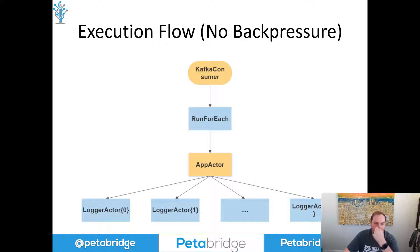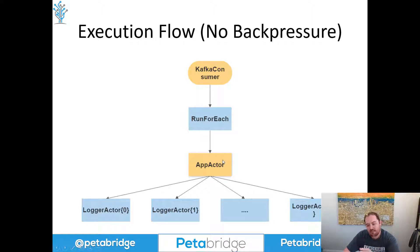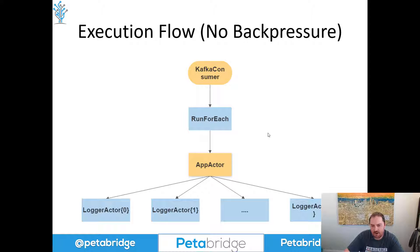Here's what the workflow kind of looks like: we have our Kafka consumer, our little run-for-each statement which causes us to message our app actor, and then we're going to spin up possibly thousands of these logger actors in parallel. It kind of depends on how quickly we can pull events out of the Kafka consumer. I'm going to pause for a second and actually get my demo application up and running so we can see the memory performance characteristics, and compare that to an application that does have proper backpressure support built into it.